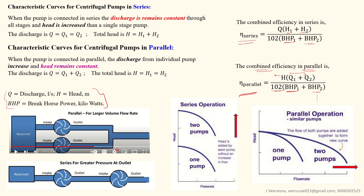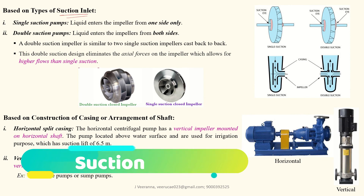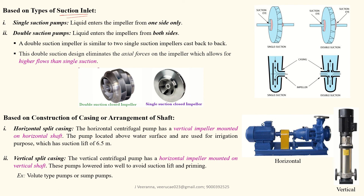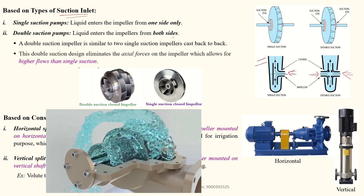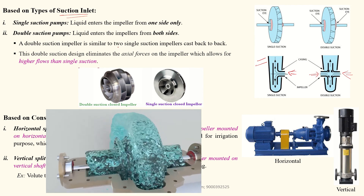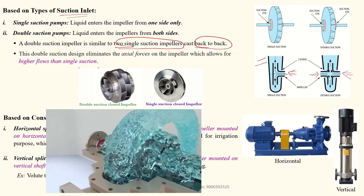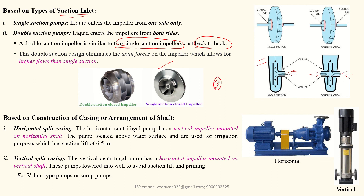The next classification is based on suction type. In a single suction pump, liquid enters from only one side. In a double suction pump, water enters from both sides. The double suction impeller is equivalent to two single suction impellers placed back to back on a common shaft. This double suction design eliminates the axial force on the impeller, which allows for higher flow rates than a single suction design.